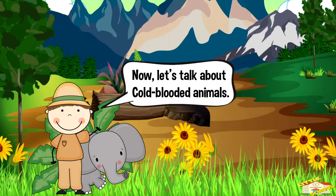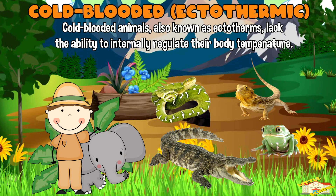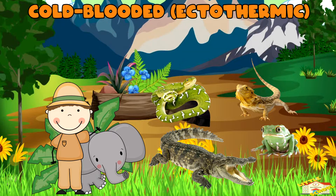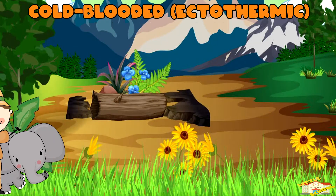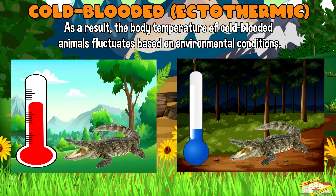Now let's talk about cold-blooded animals. Cold-blooded animals, also known as ectotherms, lack the ability to internally regulate their body temperature. Instead, their body temperature is heavily influenced by the temperature of their surroundings.